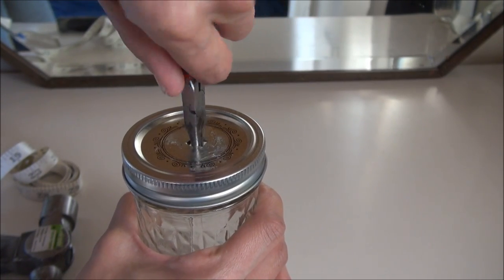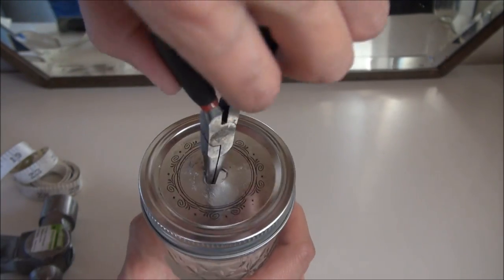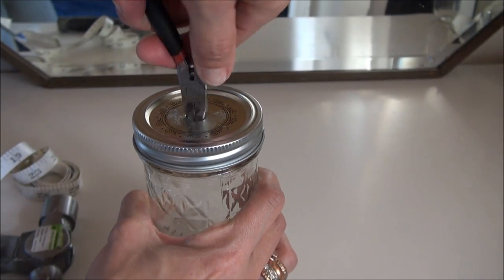I just used the pliers to make the actual hole. When you start spinning it, it starts making a circle anyways, so that works out perfect.